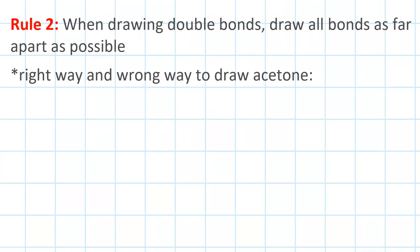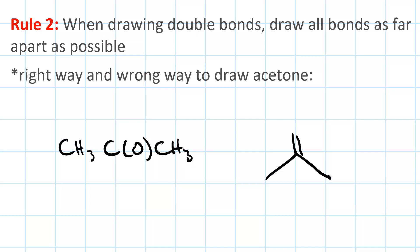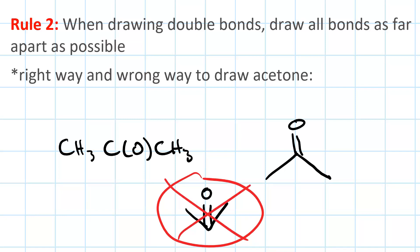Rule number 2: you want your carbon-carbon backbone to reflect as closely as possible the actual geometry of the molecule. When you're drawing double bonds, draw them with bonds as far apart as possible, reflecting the fact that the molecular shape of double-bonded carbons is trigonal planar with sp2 hybridization. For instance, the molecule acetone, CH3COCH3, you would draw like this — that's the right way. You would not want to draw it incorrectly. You want it to be trigonal planar, satisfying VSEPR theory where the electron groups are as far away as possible.